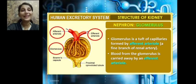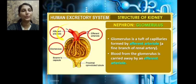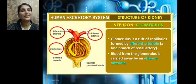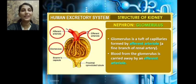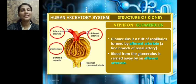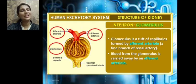The renal artery enters the kidney, and one fine branch of it is called the afferent arteriole, which carries blood into the tuft of capillaries called the glomerulus. Blood from the glomerulus is carried out by another vessel called the efferent arteriole. So afferent carries blood into the glomerulus, and efferent carries blood away from it.